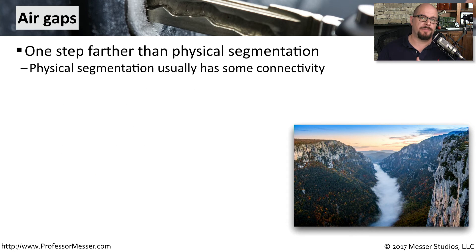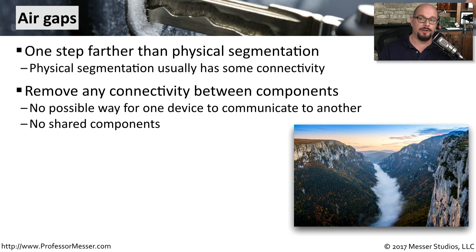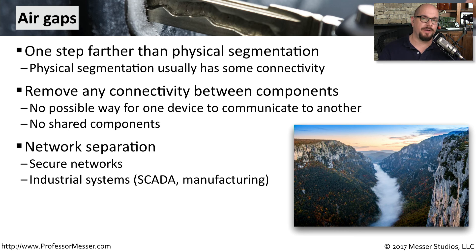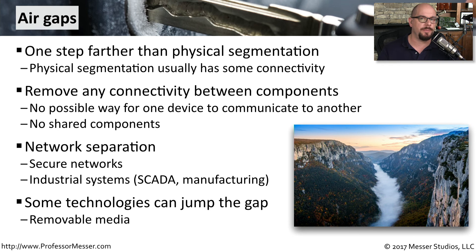If you wanted the ultimate in physical segmentation, you would create an air gap. If you have separate physical devices, there's usually some type of interconnectivity inside your network. But on an air-gapped network, the devices are truly physically separated from each other — no components are shared, and there's no possible way to communicate from one device to the other. You can be assured there's no way to get data from one of these devices to the other. We often see this type of air-gapped security on highly secure networks or networks with very important applications, such as SCADA or manufacturing networks. Some technologies, though, have been known to jump the gap. For example, if you don't disable the ability to use removable media, someone could plug into a device on one side of the air gap, walk it across, and plug into the other device.